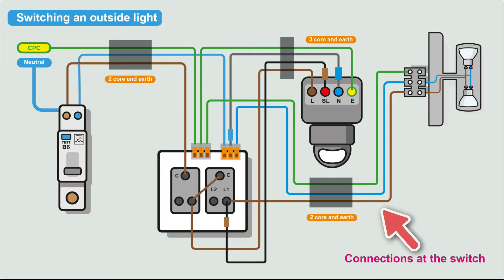The PIR is not directly feeding the light. It's going via the switch, and we would run a two-core and earth to the light, because we just need the switch live, neutral, and CPC.